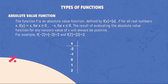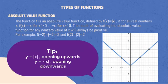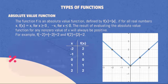Using the values in table as an example, we will get a graph of an absolute value function. Tip: If it is y = |x|, the graph is usually opening upwards. But if it is y = -|x|, then the graph will be opening downwards.